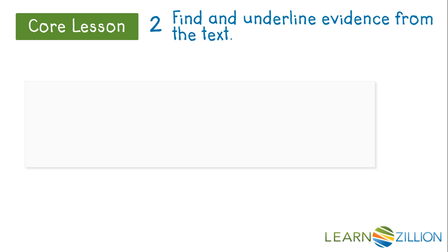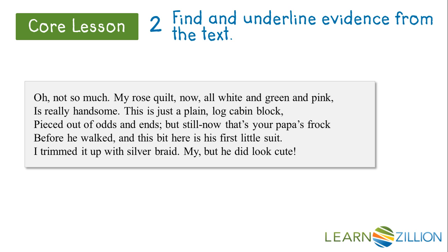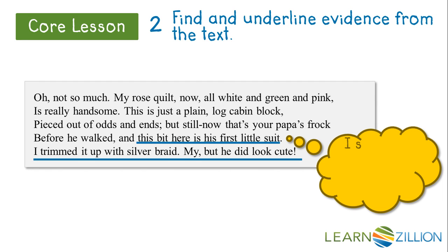Now we need to find out how she arrives at that opinion. Let's find and underline some evidence from the text. We see that grandmother has made the quilt and has included her son's frock from before he walked and his first suit, which she also made. She is remembering her son and thinking about how cute he looked as a child.